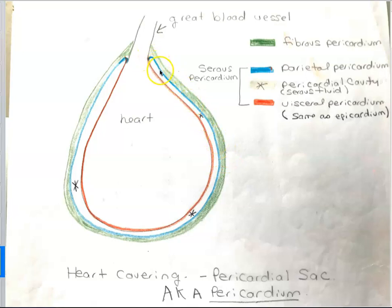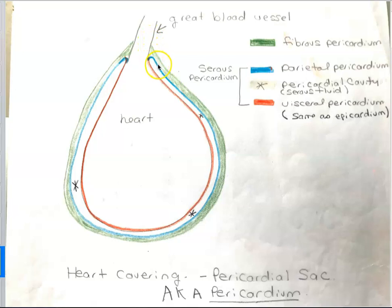Now, since this is only simple squamous, one layer thick, and the heart is doing all this beating, we are going to add an outer layer. We're going to call it the fibrous pericardium, and this outer fibrous pericardium is actually made up of dense, irregular connective tissue. This fibrous pericardium is also going up to the great blood vessels, and it is fusing with the parietal pericardium. So the parietal pericardium and the fibrous pericardium are fused together.